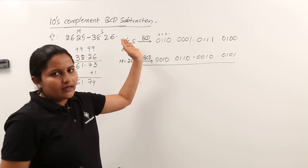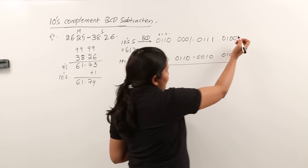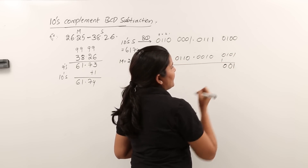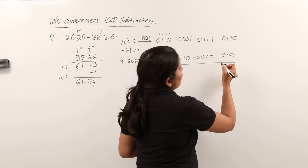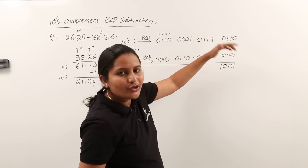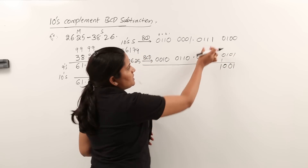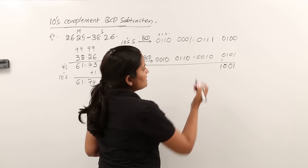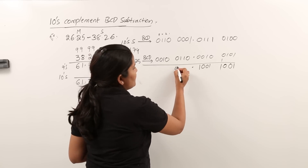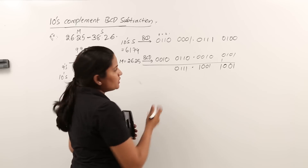Now after taking the minuend and subtrahend in BCD, the next step is to add these two BCD values together. Adding 4 and 5 gives 9; same 9 in binary. Adding 7 and 2 gives 9: 1001. Adding 1 and 6 gives 7: 0111. Adding 6 and 2 gives 8: 1000. So the addition result digit by digit is 8, 7 . 9, 9.